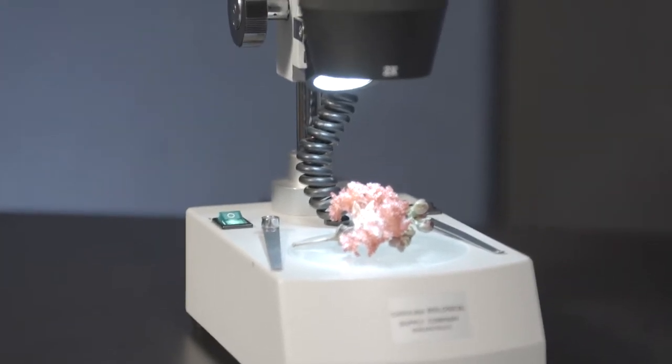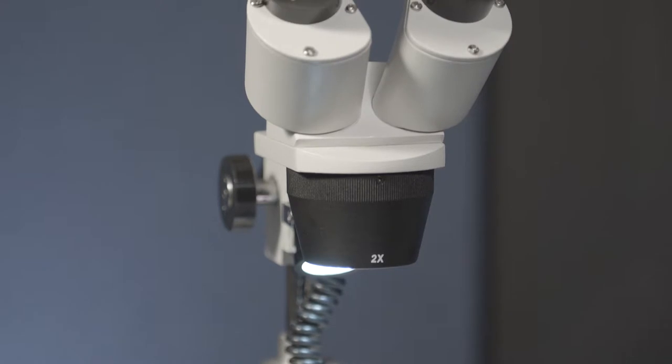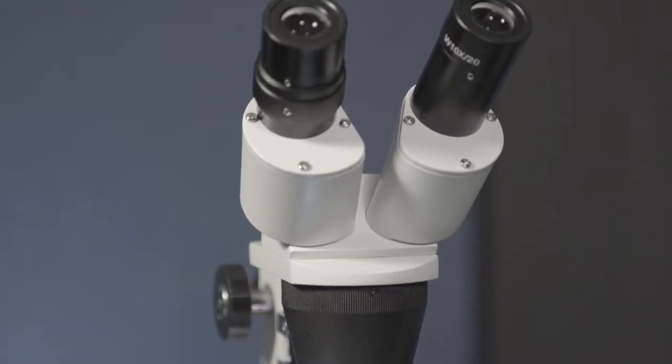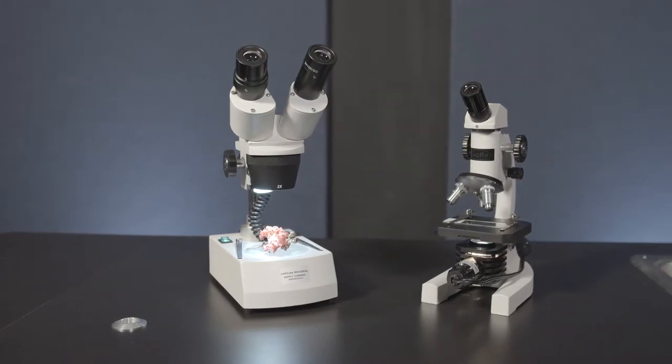Stereo microscopes are typically used to view small details in larger solid objects, such as rocks, plants, or insects, at 10 to 40 times magnification levels.